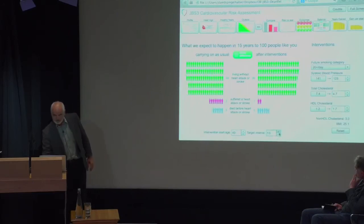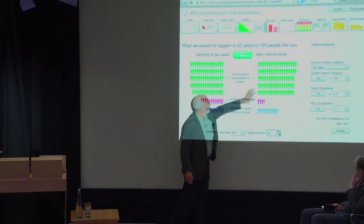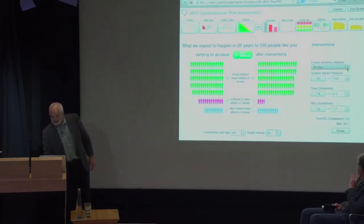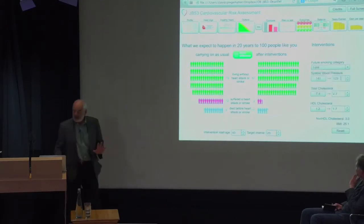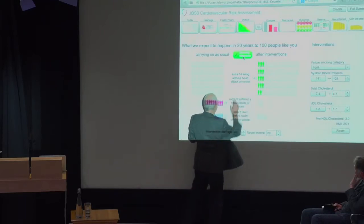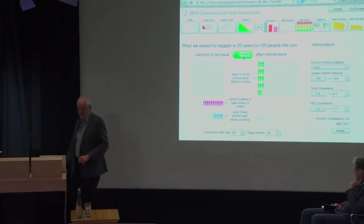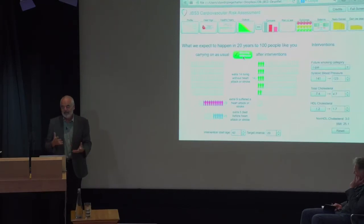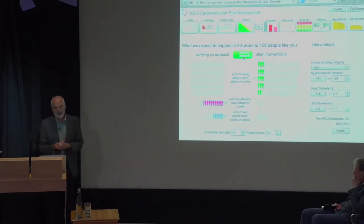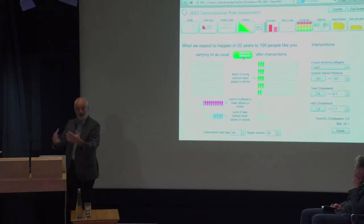Stop smoking — get a grip! A difference diagram shows very powerfully that the people who would have had a heart attack or stroke or died are now going to be healthy instead. These various representations have been tested by psychologists in randomised trials, strongly suggesting that even people with low numeracy can grasp these with good explanation. This tool is not particularly supposed to be used directly by patients, though they can — it's supposed to be a three-way device between doctor and patient. That's the kind of thing I think is really quite exciting at the moment.